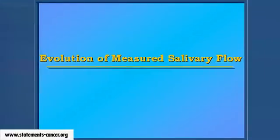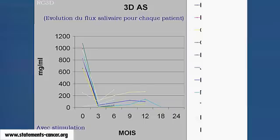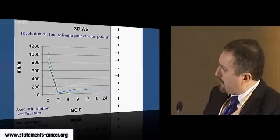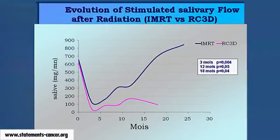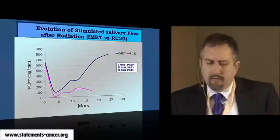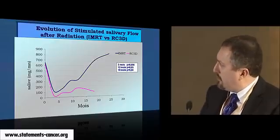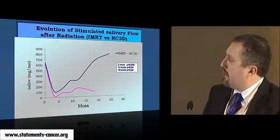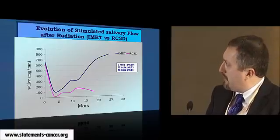We measured whether this dose reduction translates to better saliva at long term. With IMRT, for all patients, after a decrease in saliva between three and six months, saliva returned to normal at 18 months — which was not the case for 3D treatment plans. The difference was significant even at three months. At 12 months, we recovered 80% of saliva, and at 18 months we reached normal saliva levels. These were patients treated with large volumes, not small volumes. We can tell our patients: you will have xerostomia for one year, and then it will recover. That is a real progress.